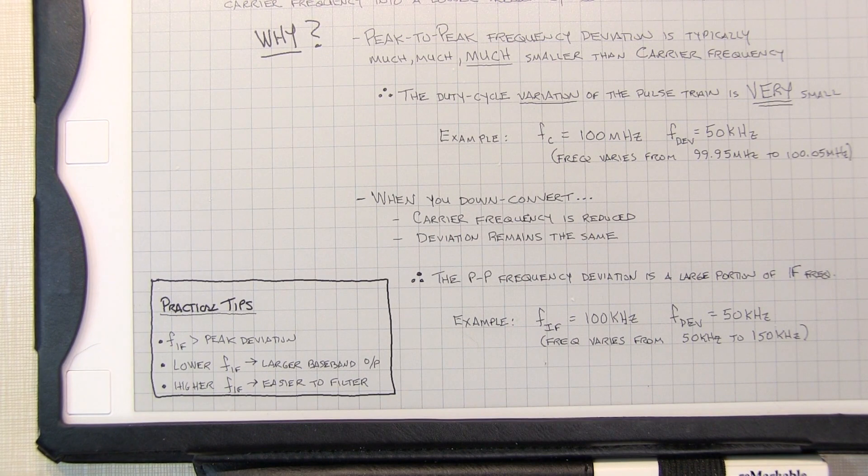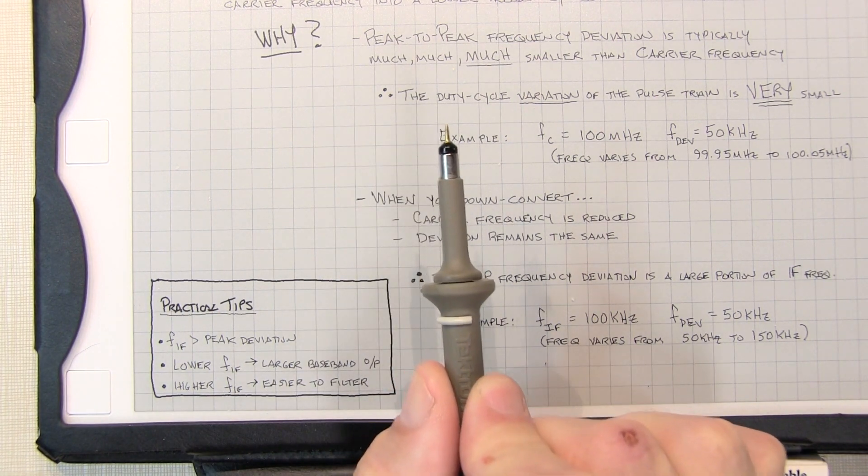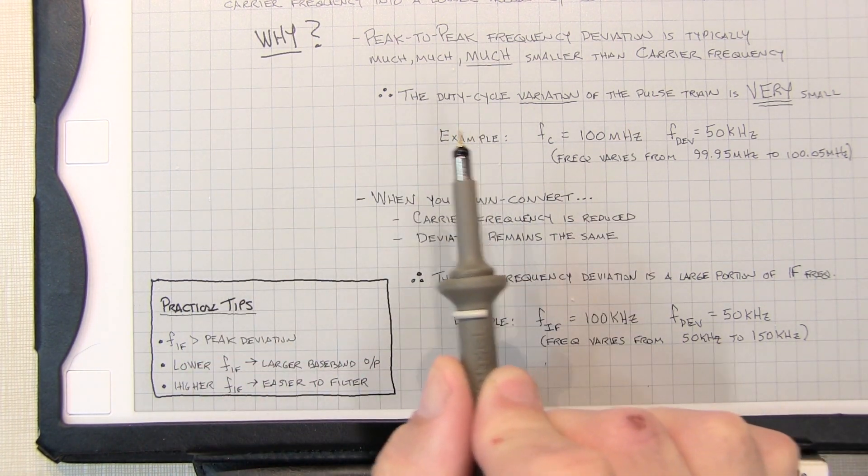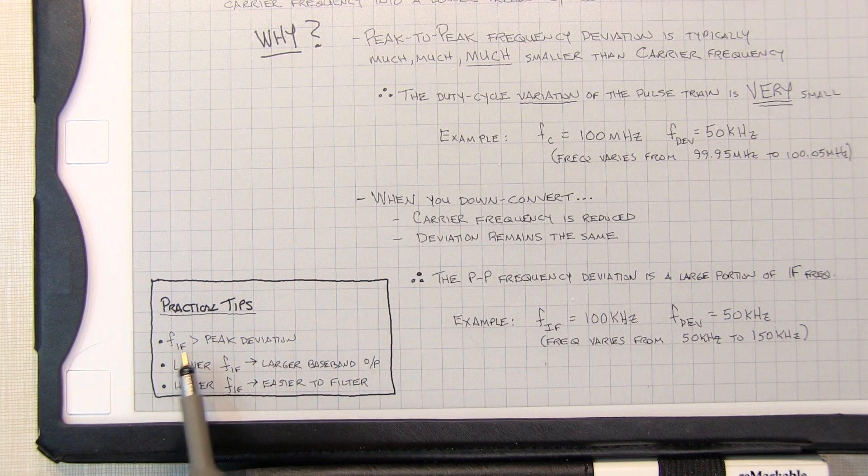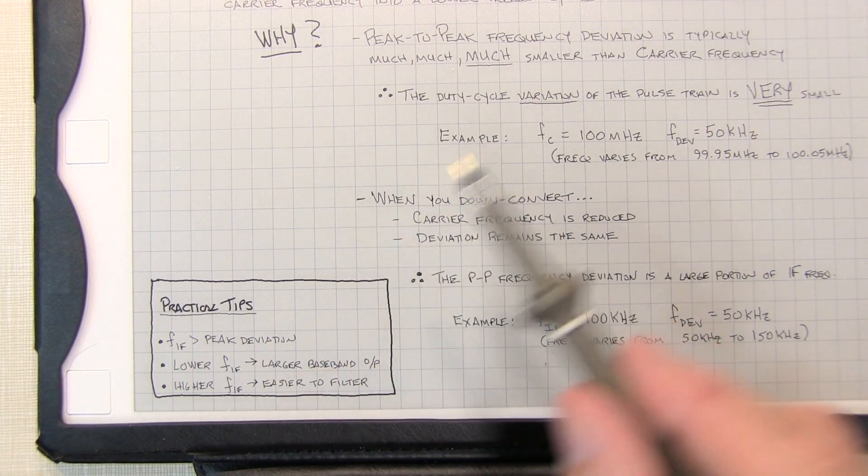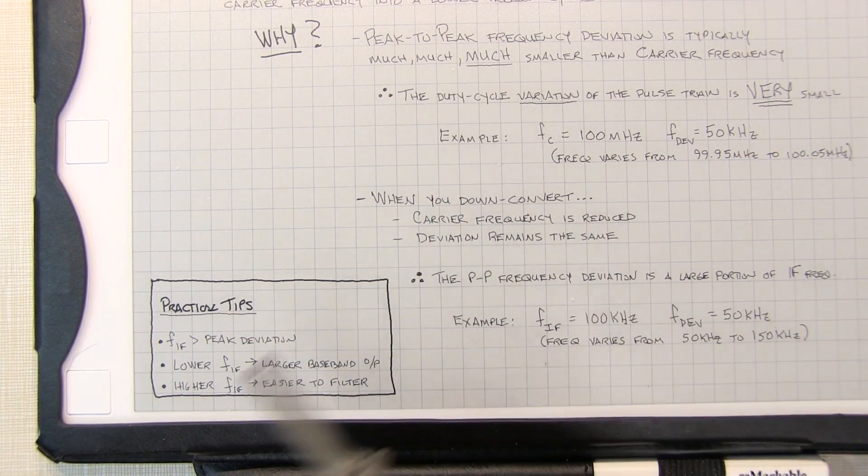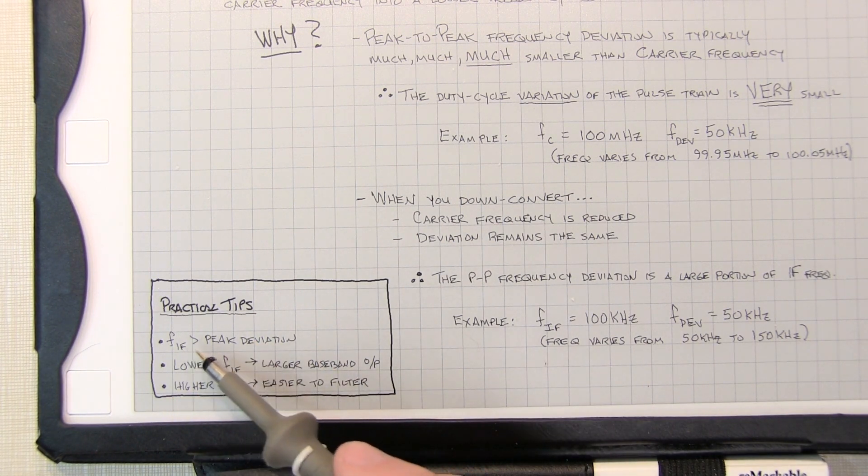And a couple more practical tips for this pulse counting FM demodulator: the IF frequency is going to have to be greater than the peak deviation, right? Because if you got a carrier and its deviation is going down and up, you want to be sure that when you go down you don't go down to DC. So therefore the IF frequency has to be at least greater than the peak deviation and typically about two or three or four times the peak deviation of your signal. Now of course the lower the IF frequency the larger the baseband output. So the lower you can make that IF, the bigger response you're going to get out of the pulse counting detector. But you got to be sure you don't go too low because you might run into this problem.